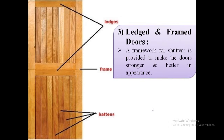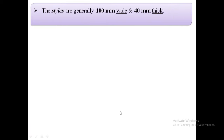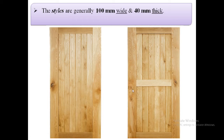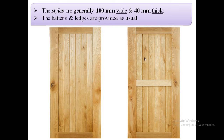The third type of door is ledge and frame doors. In this type of door, a framework for shutters is provided to make the doors stronger and better in appearance. This is the image of ledge and frame doors which consists of the framework, these ledges, and these battens. The vertical members are known as stiles and these stiles are generally 100 mm wide and 40 mm thick. The battens and ledges are provided as usual in this type of door.